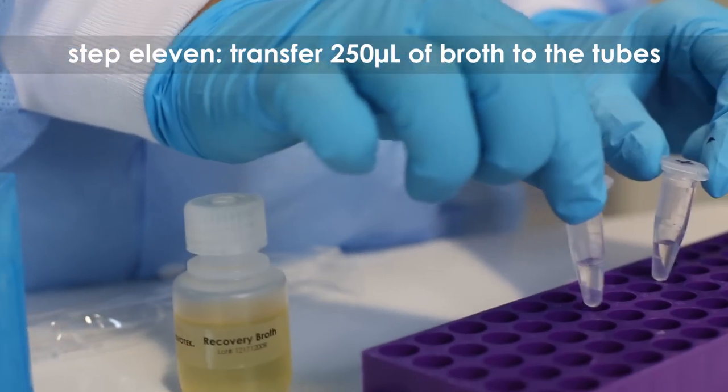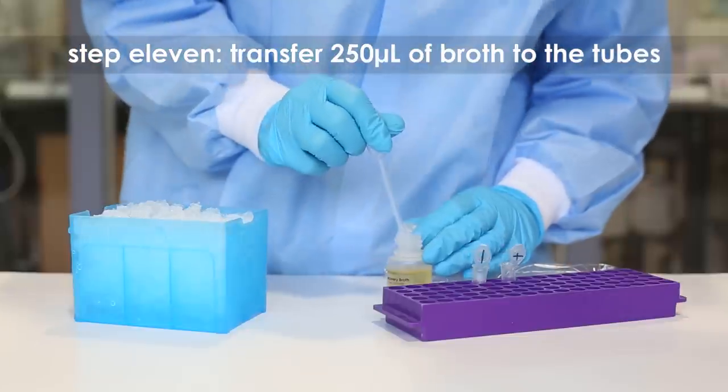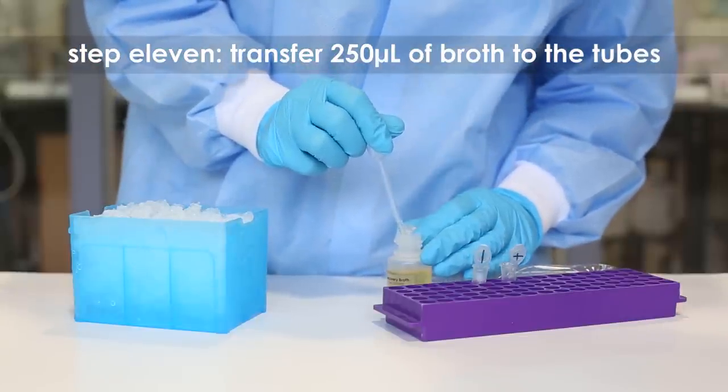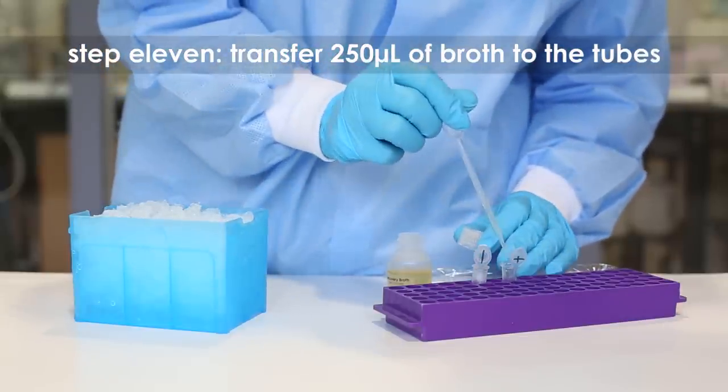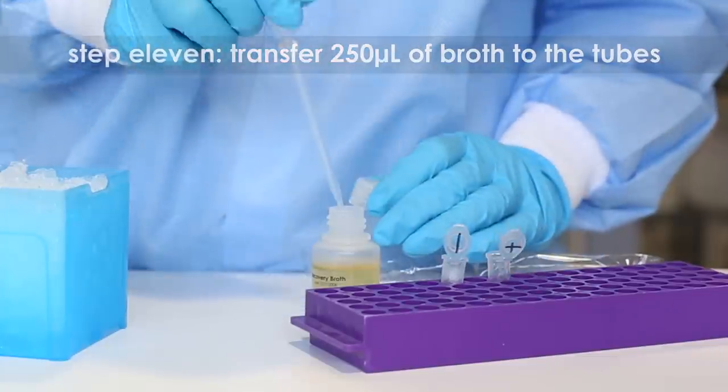Step eleven: transfer 250 microliters of Luria recovery broth to the tubes using a sterile 1 milliliter pipette. Gently mix by flicking the tube.